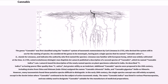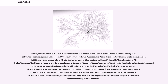In the early 20th century, the single-species concept was still widely accepted, except in the Soviet Union where cannabis continued to be the subject of active taxonomic study. The name Cannabis indica was listed in various pharmacopoeias and widely used to designate cannabis suitable for the manufacture of medicinal preparations. In 1924, Russian botanist D. E. Janischewsky concluded that ruderal cannabis in central Russia is either a variety of C. sativa or a separate species, and proposed C. sativa L. var. ruderalis and Cannabis ruderalis as alternative names. In 1929, plant explorer Nikolai Vavilov assigned wild or feral populations of cannabis in Afghanistan to C. indica var. kafiristanica, and ruderal populations in Europe to C. sativa L. var. spontanea.